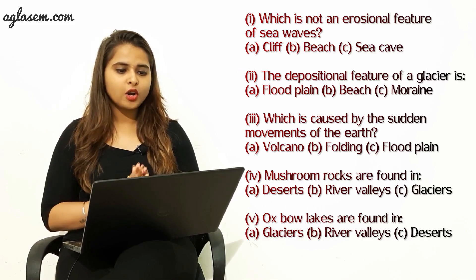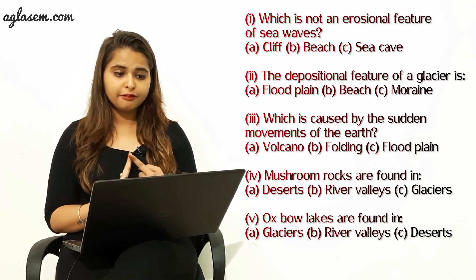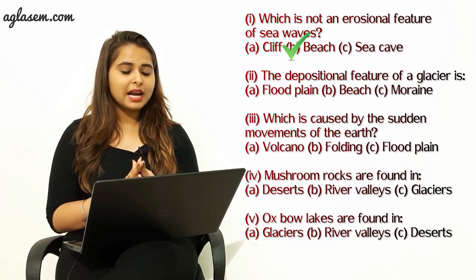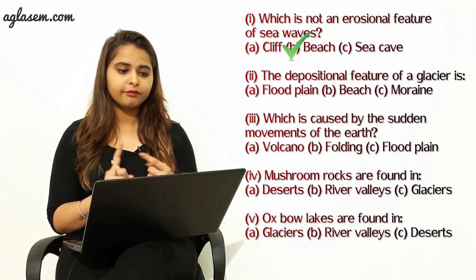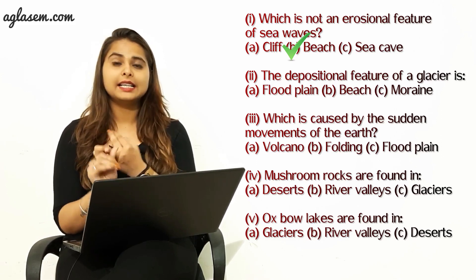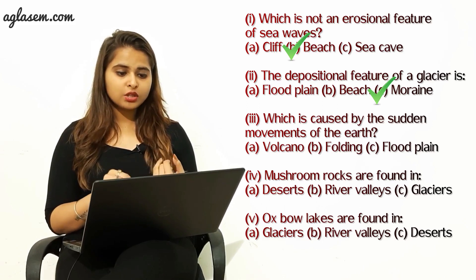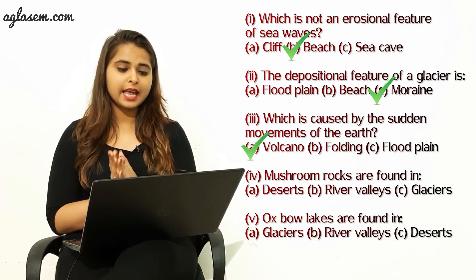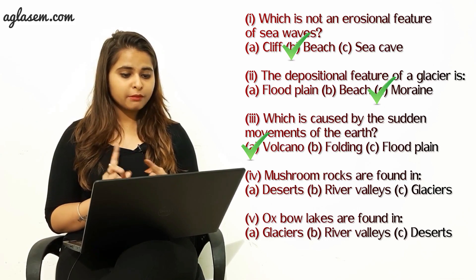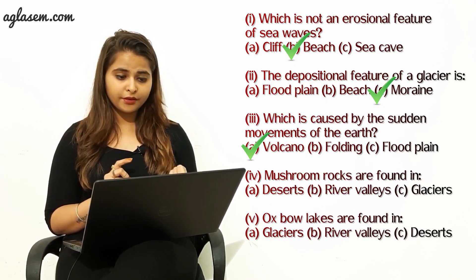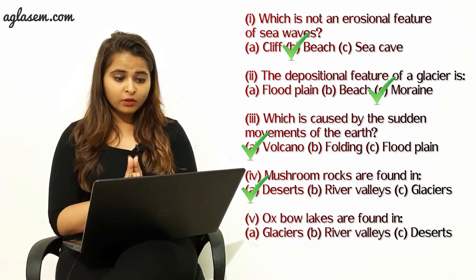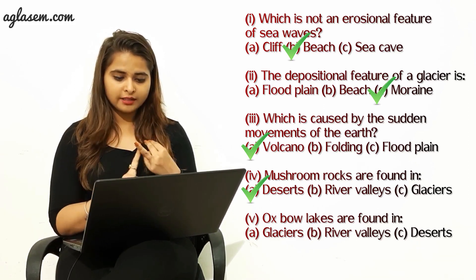The second question: tick the correct answer. First: which is not an erosional feature of a sea wave? Options are cliff, beach, and sea cape. The correct answer is beach. Second: the depositional feature of a glacier is — flood plain, beach, or moraine? The correct answer is moraine. Third: which is caused by the sudden movement of the earth — volcano, folding, or flood plain? The answer is volcano. Fourth: mushroom rocks are found in — desert, river valleys, or glacier? The answer is desert. Fifth: oxbow lakes are found in — glaciers, river valleys, or desert? The answer is river valleys.